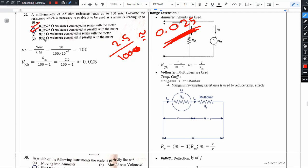There are two cases with 0.025. When we're confused whether to multiply or divide by m minus 1, remember multiplying is for voltmeter. When finding shunt resistance we use parallel. So option B is the right answer: 0.025 ohms resistance connected in parallel with the meter will extend the range to the required value.